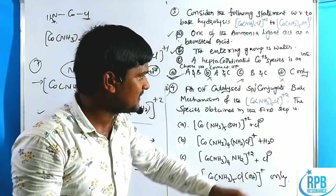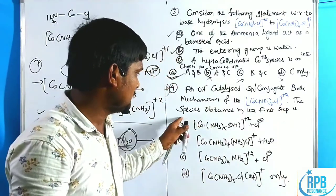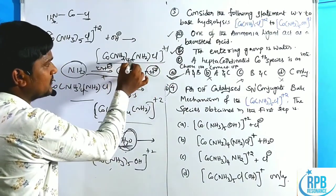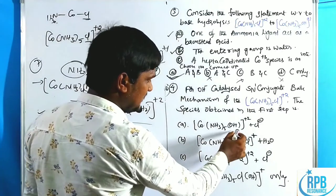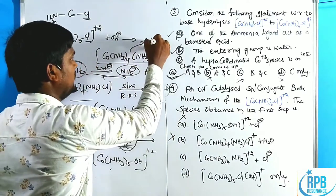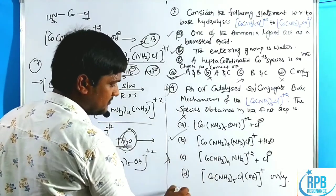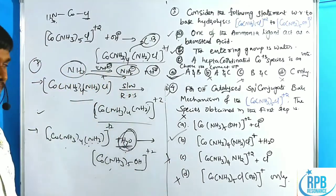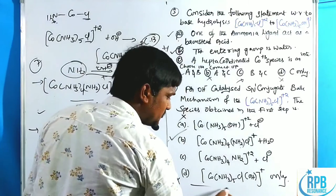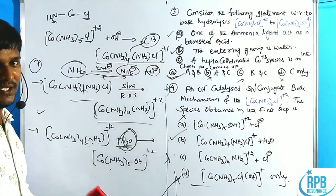For question 4 — the species obtained in the first step of OH⁻-catalyzed SN1CB for [Co(NH3)5Cl]²⁺: in the first step we get [Co(NH3)4(NH2)Cl]⁺ — the conjugate base complex. Option B is correct. Option C (intermediate) is wrong. Option D (product [Co(NH3)5(OH)]²⁺) is wrong — it assumes hepta-coordinated system which is absolutely wrong. Option A is also wrong. Our answer is B only.